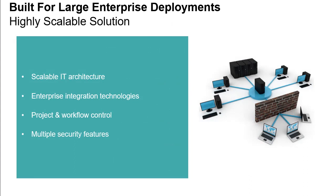Capital was built for large enterprise deployments. This is done by ensuring that it's highly scalable, including its basic IT architecture. The integration technologies ensure that Capital works with an organization's IT infrastructure rather than against it. Project and workflow controls mean organizations can control what data can be manipulated by whom and when. And significant security features are a must, especially for customers needing to maintain strict access control to sensitive data.